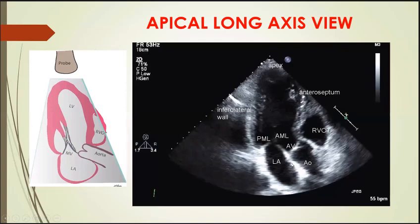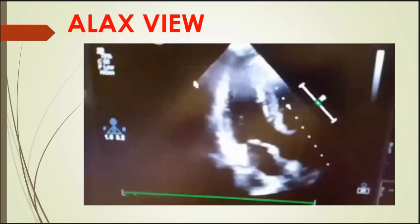To summarize the apical views: the four-chamber view shows four chambers; the five-chamber view adds the aorta to the four-chamber view; the two-chamber view shows LA, LV, and the mitral valve; the three-chamber view shows two chambers plus the aortic valve and LVOT. Any pathologies in these structures can be clearly noticed in these respective views.